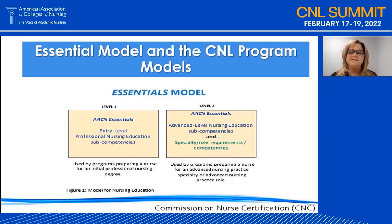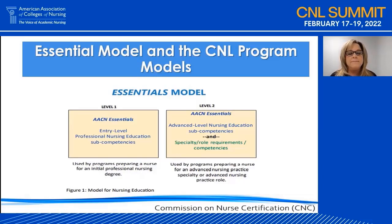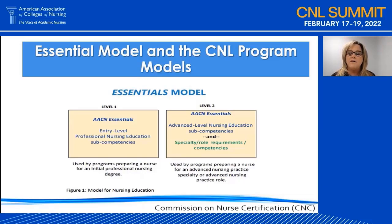Remember, the Essentials Education Model no longer aligns with the degree offering but with a set of competencies one must demonstrate. In the case of Model A, Model B, or even Model E, since nursing students are already considered professional nurses — meaning they've been educated beyond the associate or diploma degree — they should already demonstrate Level 2 professional nurse competencies. Therefore, as they expand their knowledge, skills, and attitudes beyond the professional nursing level, they will now need to demonstrate Level 2 Advanced Nursing sub-competencies and the CNL competencies.